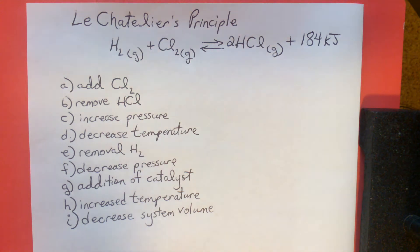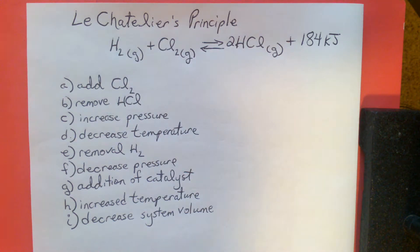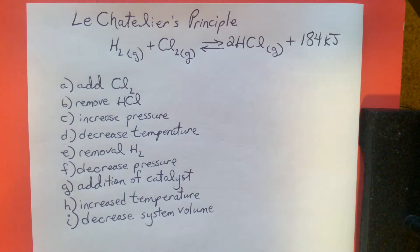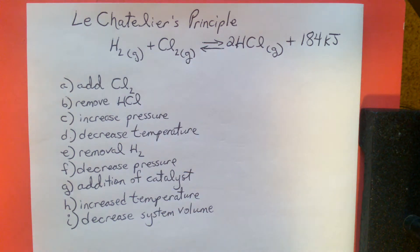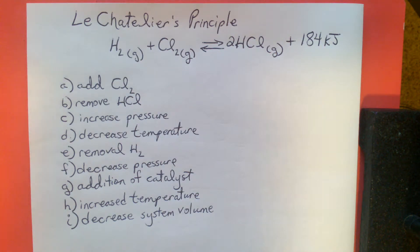Le Chatelier's principle can be defined as: the chemical equilibrium will shift or change in the direction that relieves any stressor put upon the reaction system. Any change or stressor that alters the rate of either the forward or reverse reaction disturbs that equilibrium. Once equilibrium is disturbed, Le Chatelier's principle says the reaction system will shift itself in the direction that relieves that stress.